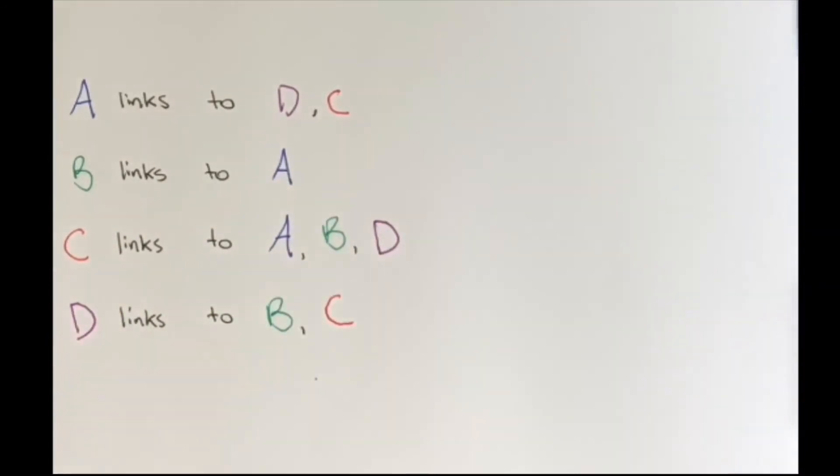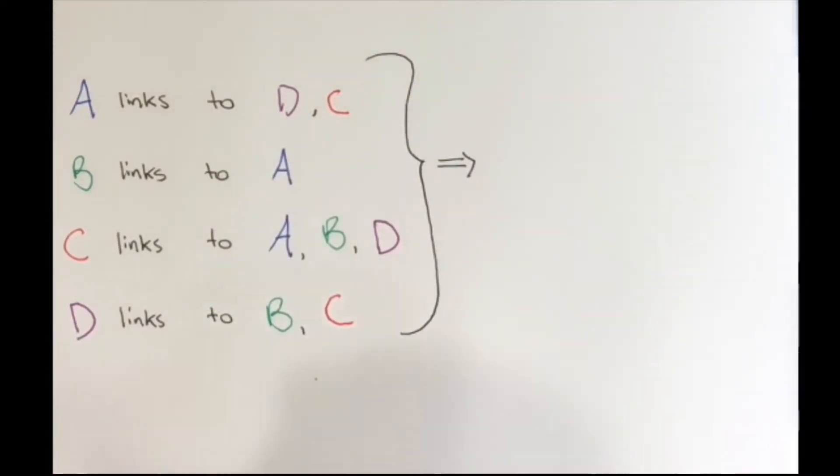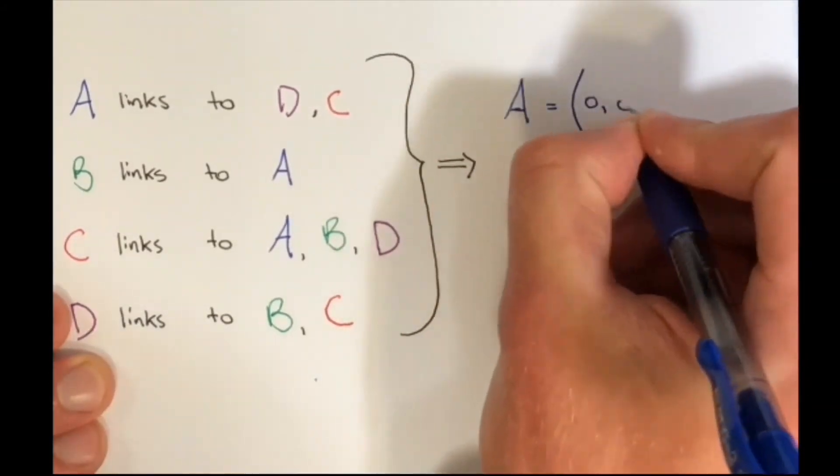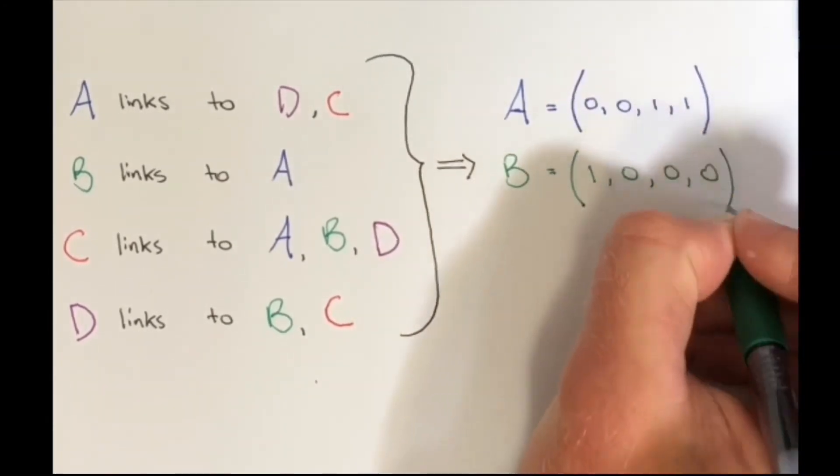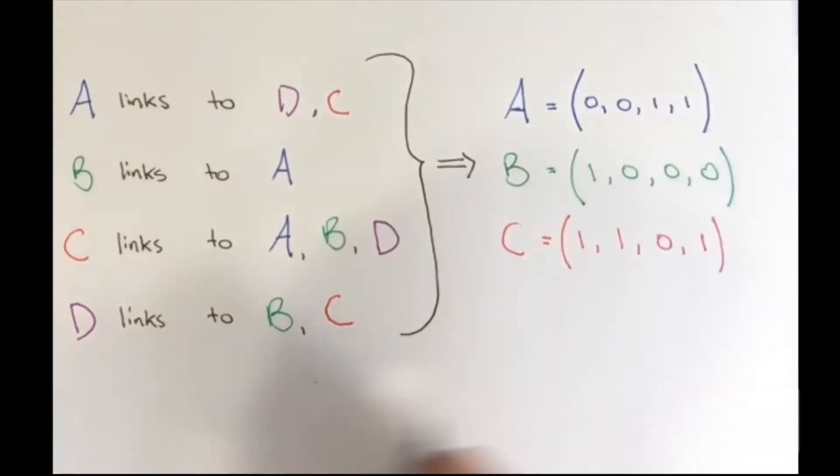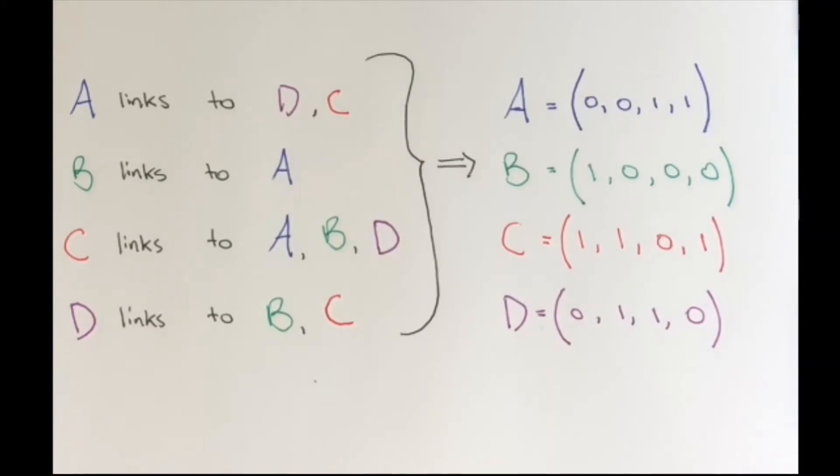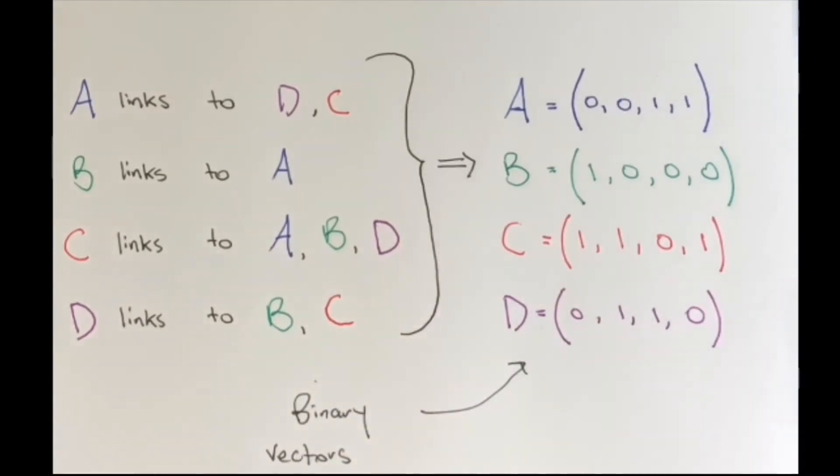Now we can rewrite these as column vectors, where the entries are zero and one. One represents a link, zero represents no link. So we see A links to two websites, so it has two ones. And those ones are in the third and fourth entry, because it has a link to websites C and D. And B has a one in the first entry, because it has a link to A. These are binary vectors, because all entries are zero and one.